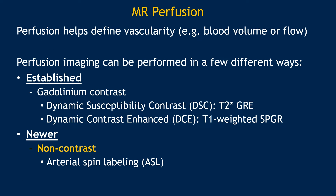Perfusion MRI, or perfusion-weighted imaging, helps define vascularity, such as blood volume or blood flow. Perfusion imaging can be performed in a few different ways. You can give gadolinium contrast and perform dynamic susceptibility contrast, or DSC, which is a T2 star gradient technique. Or you could try dynamic contrast enhanced DCE, or T1-weighted SPGR technique. These are two well-established perfusion techniques. However, there's a newer technique that does not use gadolinium contrast, called arterial spin labeling, or ASL.